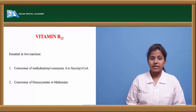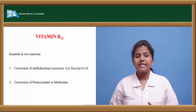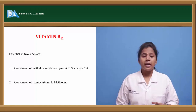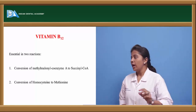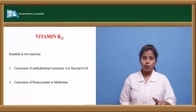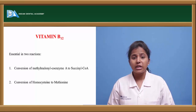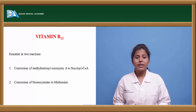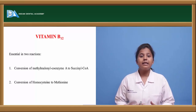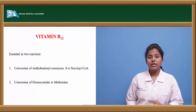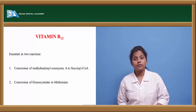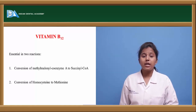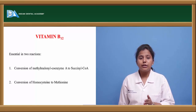How does vitamin B12 act? It essentially involves two important reactions: one is the conversion of homocysteine to methionine, and the other is the conversion of methylmalonyl coenzyme A to succinyl coenzyme A. These are very important biotransformation reactions occurring in the body, mainly involving the metabolism of various chemical compounds, and take place in the liver. Vitamin B12 plays a major role in both reactions.